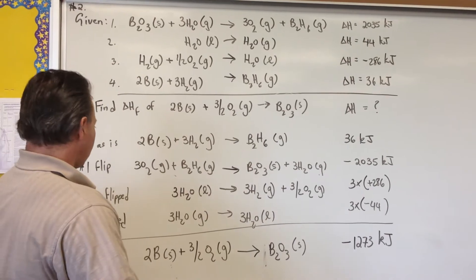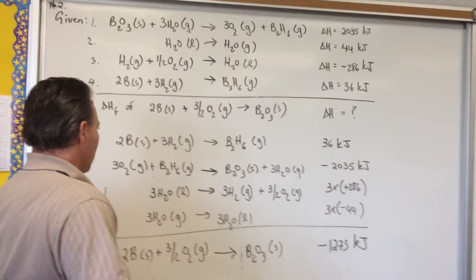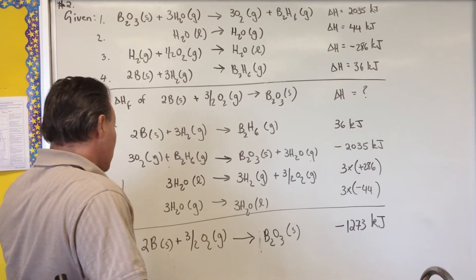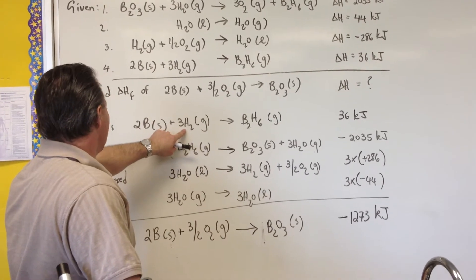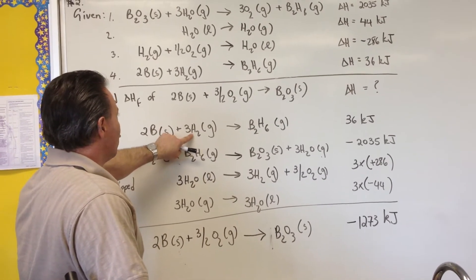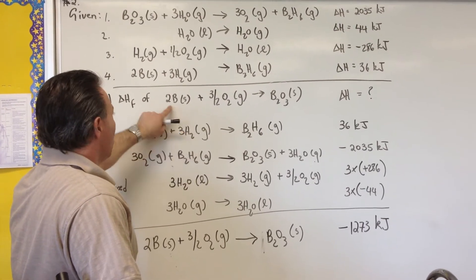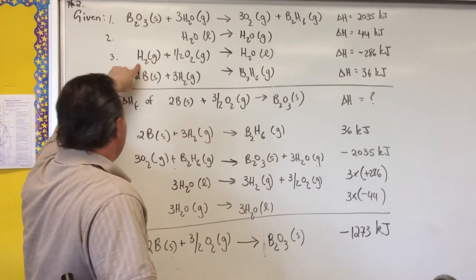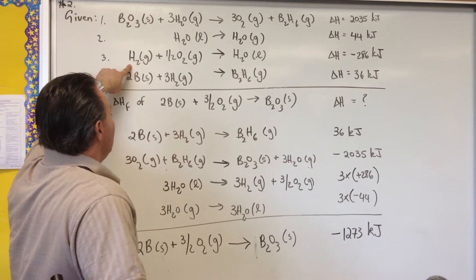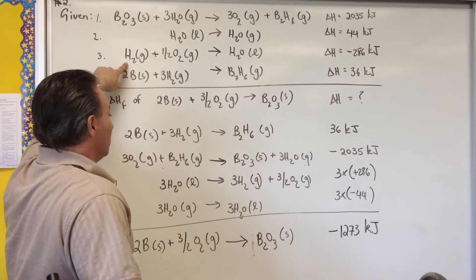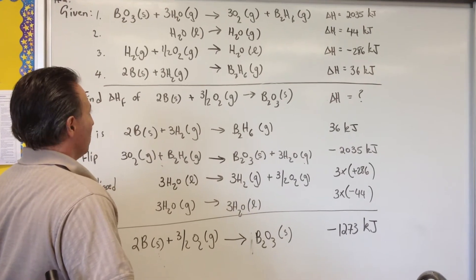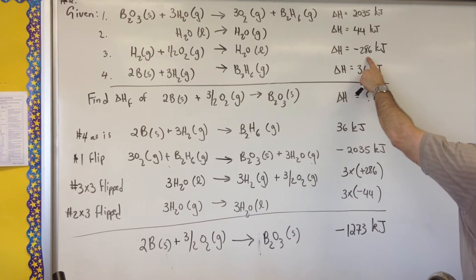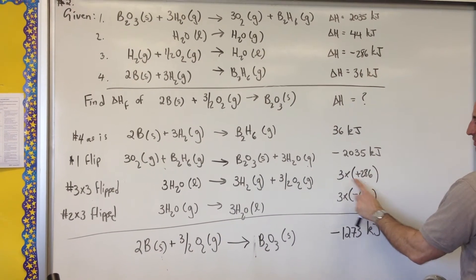The next step was to look for something that would eliminate the hydrogen that appears in equation number four. Number four has three hydrogen atoms, and my target equation has no hydrogen. So I looked for an equation that had hydrogen in it, and that was number three. Number three was in the wrong order, and I needed three times as much hydrogen. So I flipped number three and I multiplied it by three. And of course, I reversed the sign on the enthalpy and multiply it by three. So if it was negative 286, it becomes positive 286, and I multiply it by three.